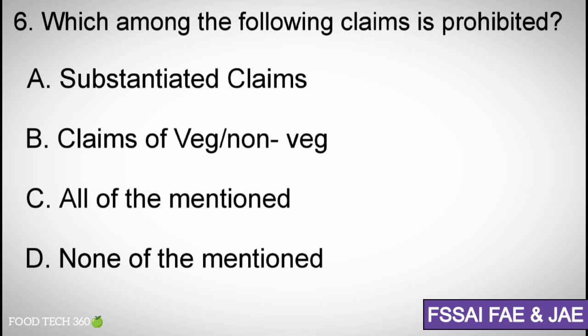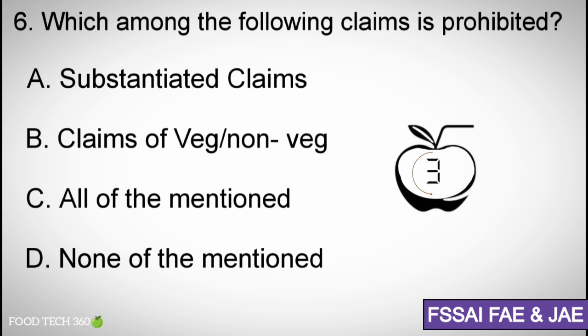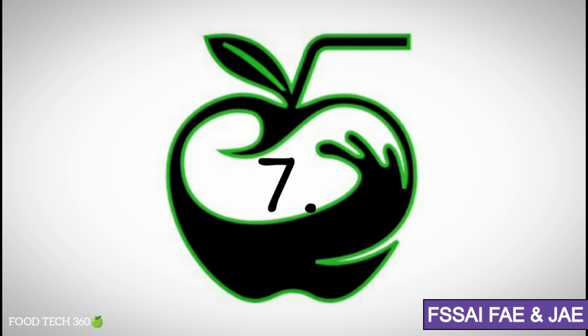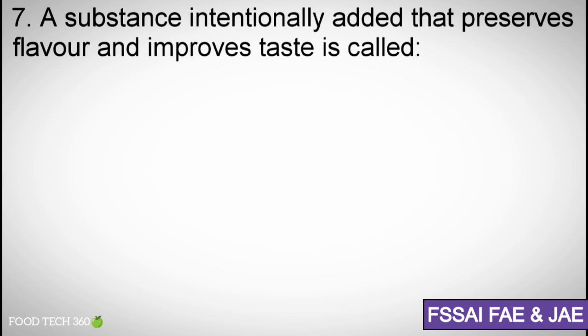Question number six: Which among the following claims is prohibited? Options: A) Substantiated claims, B) Claims of veg or non-veg, C) All of the mentioned, D) None of the mentioned. Correct answer: A) Substantiated claims.